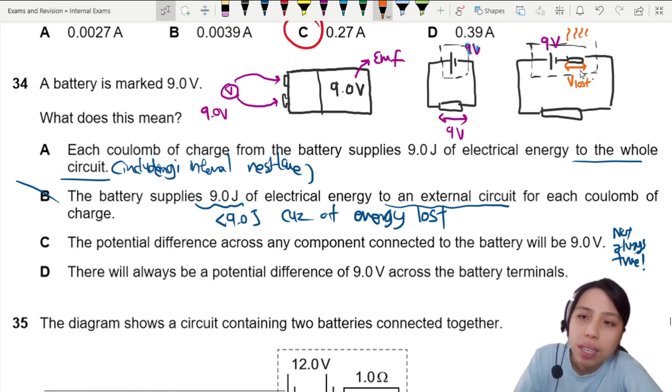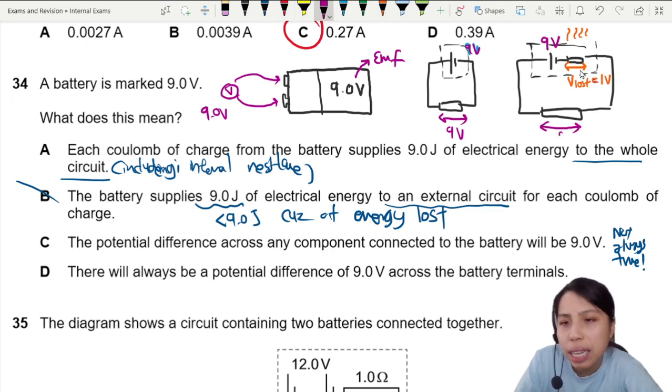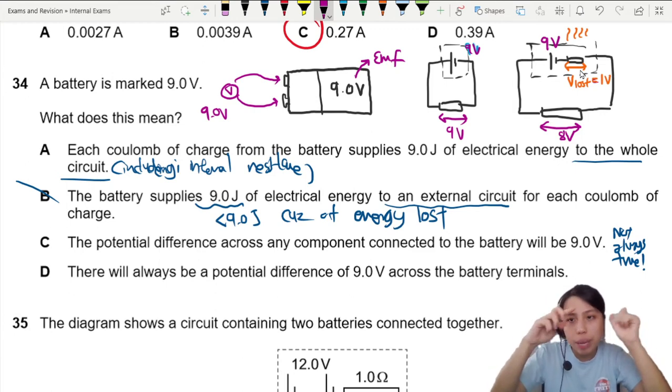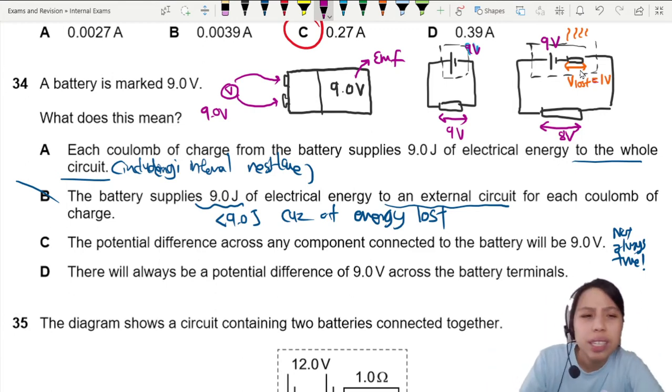If you have internal resistance, you already lose some energy. Maybe say I lost 1 volt. I lose 1 volt already. So, what comes out of the battery is 9 minus 1. So, this poor resistor here only get 8. Because you treat the whole battery as one unit. 9 minus 1, 8. So, no, not always 9 volts. You will have lost volts.